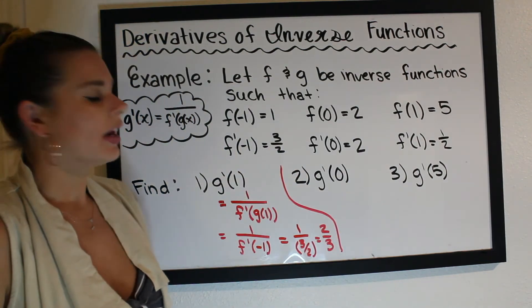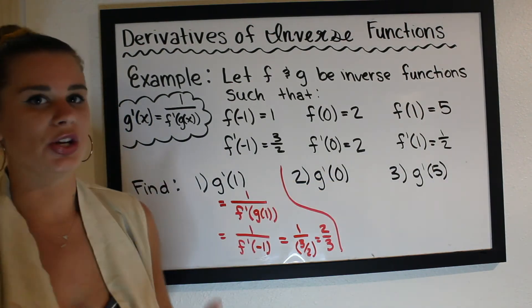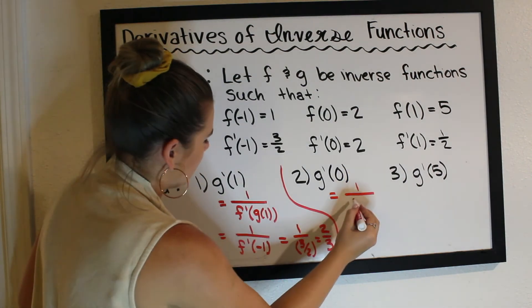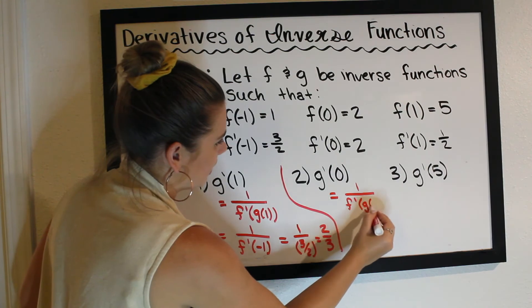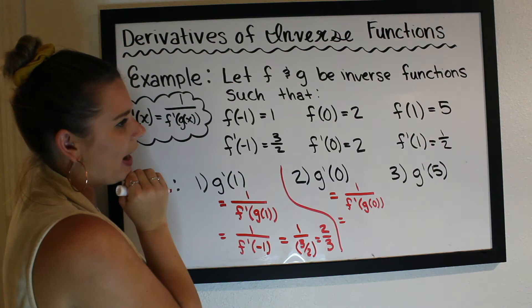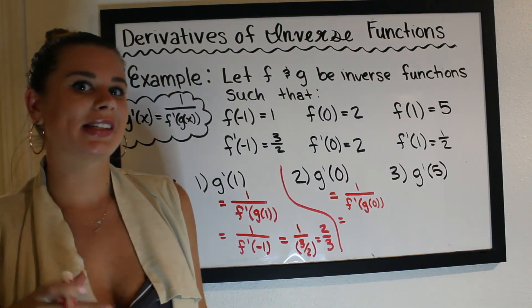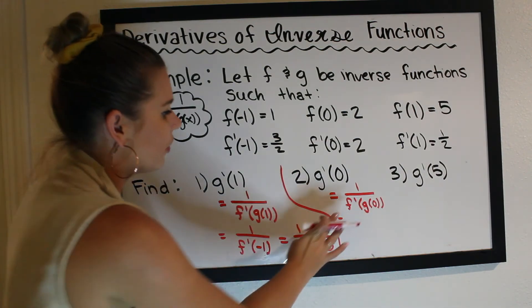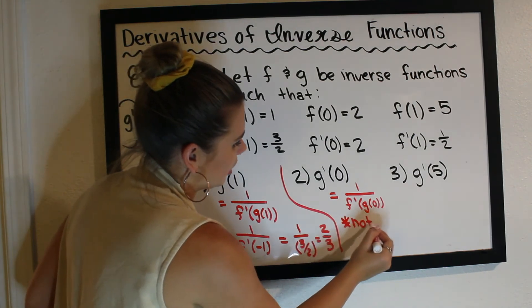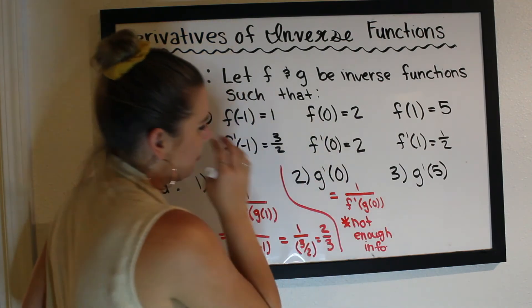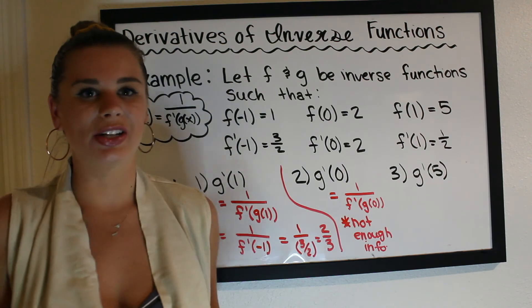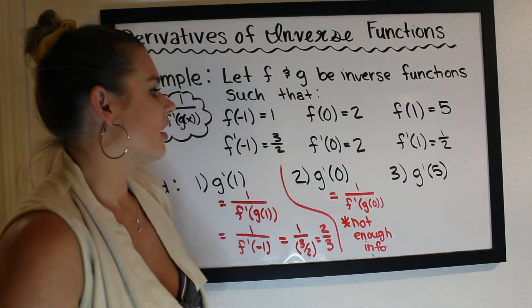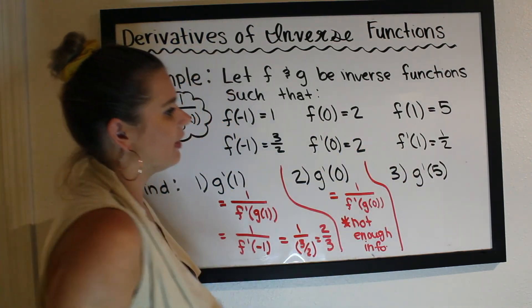For g prime of zero: using the same rule, g prime of zero equals one over f prime of g of zero. We need g of zero, which requires finding an output of zero from f. Looking at our information, we don't have an output of zero — we have inputs but none produce zero. So for this one, there's not enough information. We'd need to know what input into f gives an output of zero to determine g of zero, and we don't have that besides knowing g is the inverse of f.